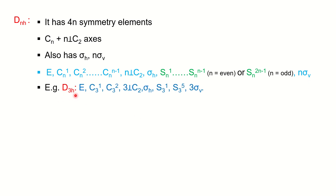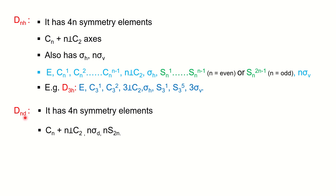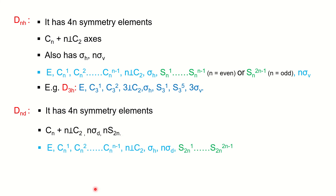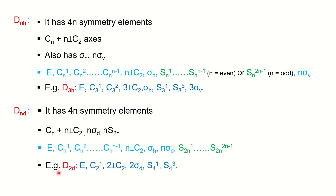Taking D3H as an example: the principal axis is C3, and the total operations are 4×3 = 12. For DND, there are 4N operations. This point group has perpendicular C2 axes and dihedral planes, but no molecular (horizontal) plane. The improper axis formula for DND is S2N. Taking D2D as an example, total 4N = 8 operations.